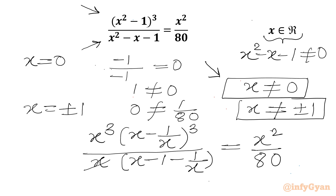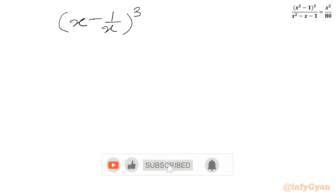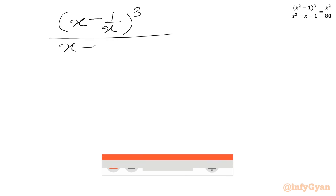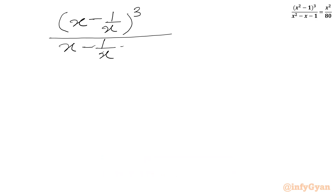Now we can cancel x cubed and x squared. So I will write: x minus 1 over x, whole cubed, over x minus 1 over x, minus 1, equal to 1 over 8.